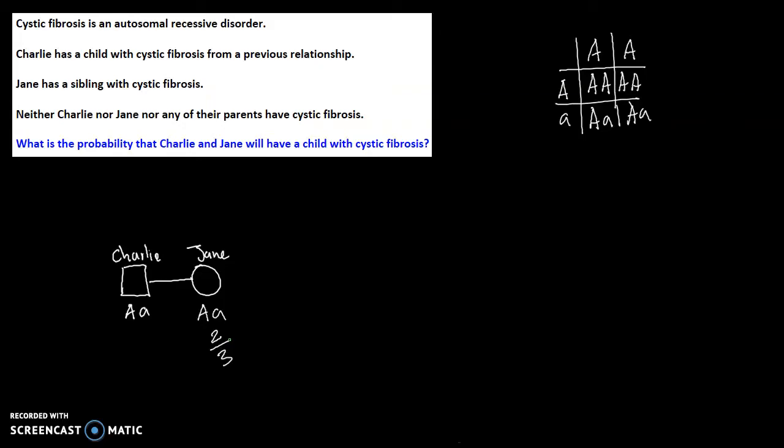Lastly, the reason we know it's possible for Jane to have the lower case letter a is because she has a sibling with the disease, which tells us about their parents. Both of them must be carriers. And as a consequence, Jane is able to have the lower case letter a in her genotype.